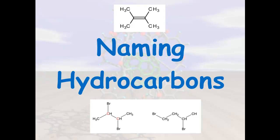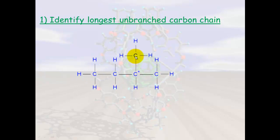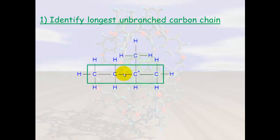Naming hydrocarbons looks complicated but it's really not if you follow a couple of simple steps. First, identify the longest unbranched carbon chain. When we look at a molecule like this, we count the carbons: one, two, three, four in that chain, or one, two, three in that chain. So this chain or this chain is our longest unbranched carbon chain — we can identify it by highlighting it or putting a box around it.